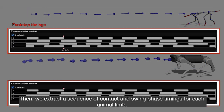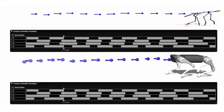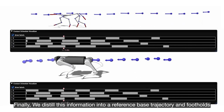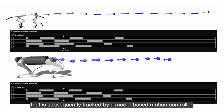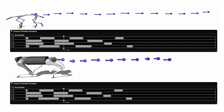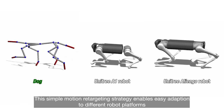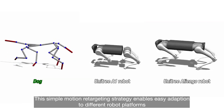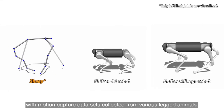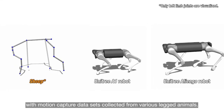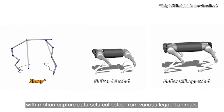Then, we extract a sequence of contact and swing phase timings for each animal limb. Finally, we distill this information into a reference base trajectory and footholds that is subsequently tracked by a model-based motion controller. This simple motion retargeting strategy enables easy adaptation to different robot platforms with motion capture datasets collected from various legged animals.